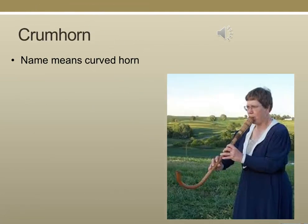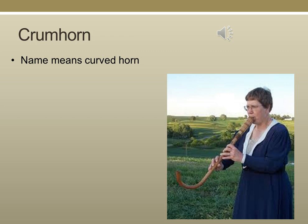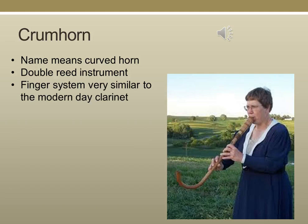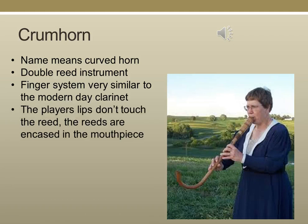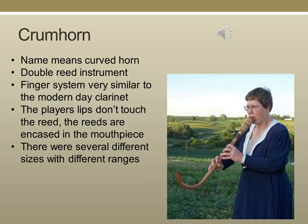Another instrument from the era was the crumhorn, whose name means curved horn. It's a double reed instrument, like a bassoon or an oboe. It has a finger system very similar to the modern-day clarinet, though the clarinet wasn't invented yet, and the player's lips don't actually touch the reed — the reeds are encased in the mouthpiece. There were several different sizes with different ranges: the longer or bigger the instrument, the lower the sound.